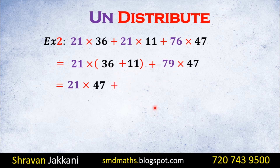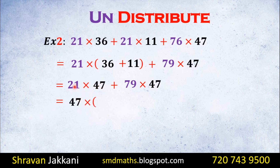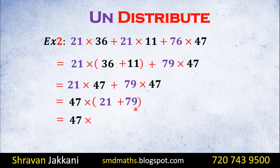Next we will write 37 plus 79 into 47, and we have 47 common. So we write 47 outside the bracket with 79 plus 21 inside. I will solve: 70 plus 20 is 90, and 9 plus 1 is 10, so 90 plus 10 is 100. Therefore 47 times 100 is 4700.